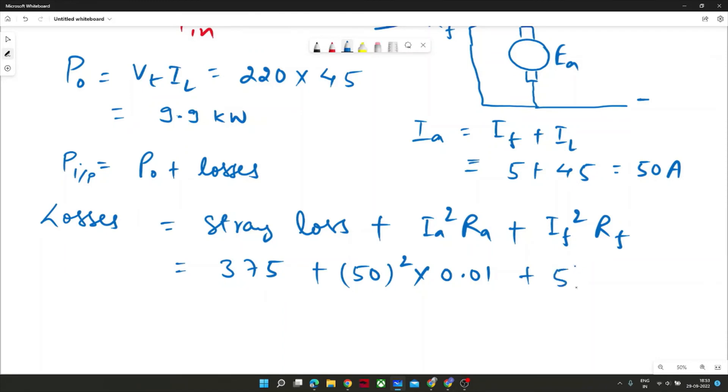And here Ia would be 50 square into Ra was 0.01 ohm plus If was 5 square into Rf 44. If we add all the losses, since no iron losses, all mechanical losses was given, so we will ignore that. And I will add it, 50 square into 0.01, it would come out to be 25, and it would come out to be 25 into 44, that is 1100.